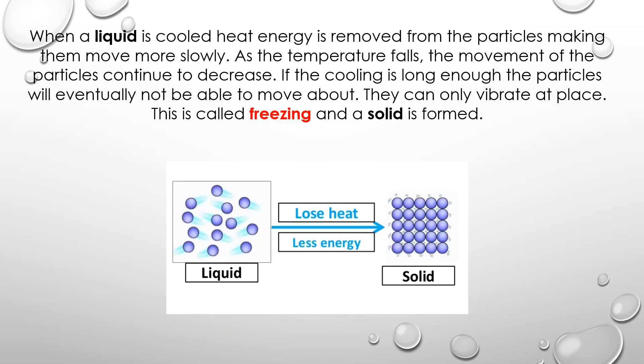When a liquid is cooled, heat energy is removed from the particles, making them move more slowly. As the temperature falls, the movement of particles continues to decrease. If the cooling is long enough, the particles will eventually not be able to move about — they can only vibrate in place. This is called freezing and a solid is formed.